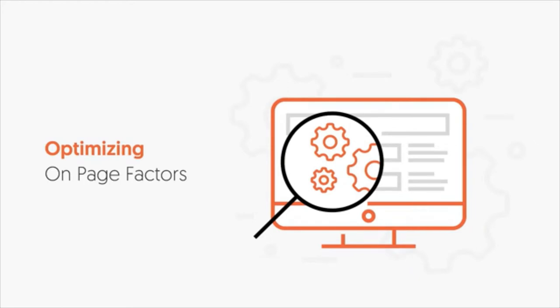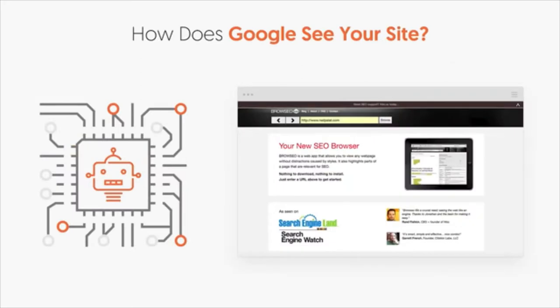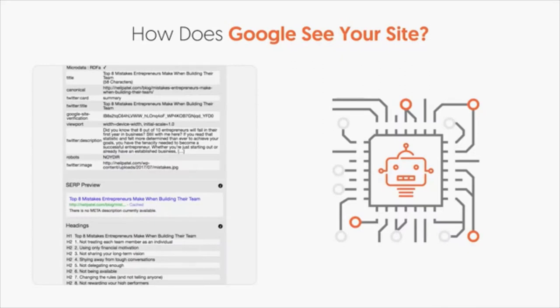Before I go into each of the factors, let me first show you how Google sees your website. Go to Browse SEO and put in your URL — this will show you how Google views your website. What you'll see is all this code and text. They don't look at your website as a pretty design; what you're seeing on the screen is roughly how they view your website.